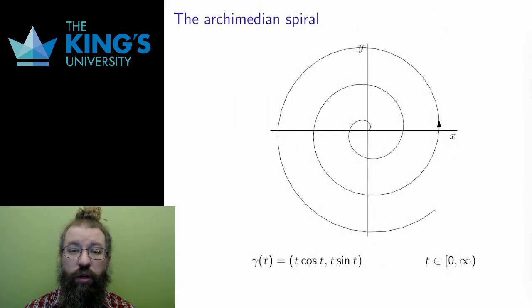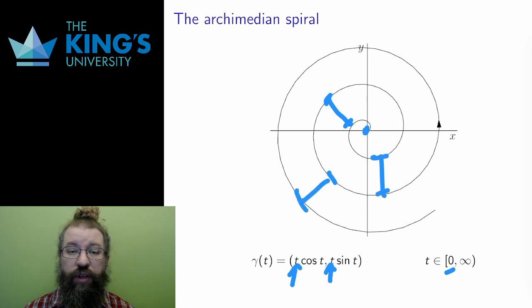This is the Archimedean spiral, where the radius increases linearly. When t equals 0, this starts at the origin. Since the increase is linear, the arms of this spiral are equally spaced. The distance between any two consecutive arms is fixed.